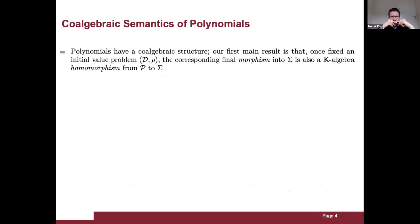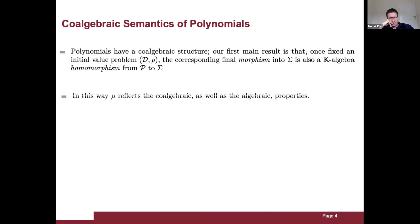Polynomials can also be given a co-algebra structure. Our first main result is that once an initial value problem is fixed, the corresponding final morphism into sigma is also a k-algebra homomorphism from polynomials to strings. Thus mu reflects both algebraic and co-algebraic properties — it is both a co-algebra morphism and a k-algebra homomorphism.